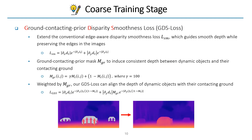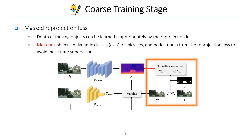Our ground contacting prior disparity smoothness loss, or GDS loss, is designed to use the ground contacting prior for self-supervised learning of monocular depth. The conventional edge-aware disparity smoothness loss guides smooth depth while preserving the edges in the images. By giving large weight on the bottom region of the dynamic objects with the ground contacting prior mask, our GDS loss can induce the depth of dynamic objects to be consistent with their contacting ground.